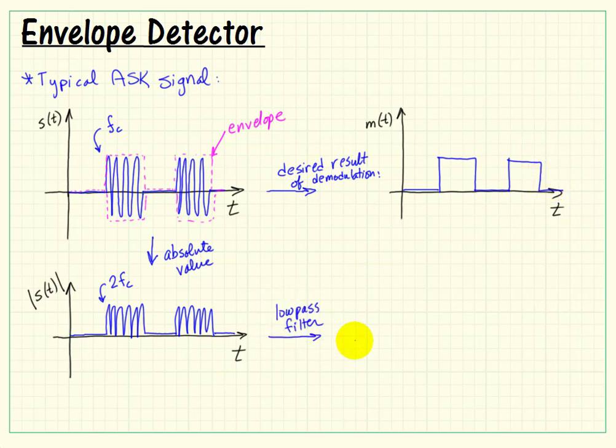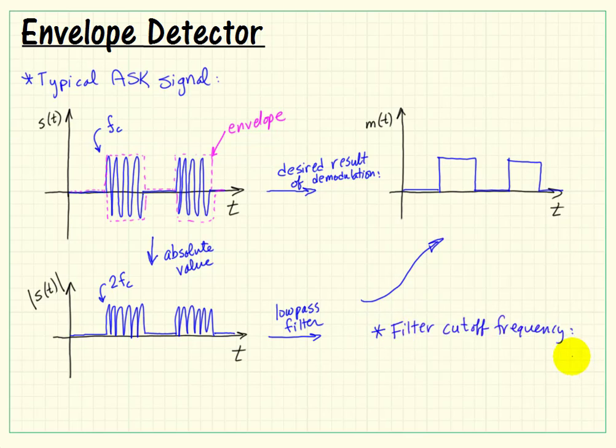The only thing remaining then would be to filter out that 2FC component. And once we've applied a low-pass filter, we have then recovered the baseband signal that we're looking for. All you have to do is make sure that you match the bandwidth of the low-pass filter to the bandwidth of your message signal.